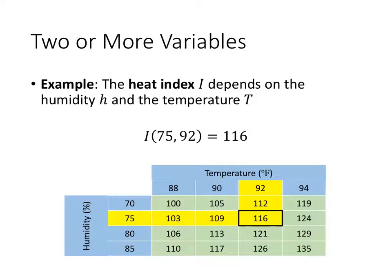So if, for example, we wanted to know what the heat index was on a 92 degree day when the humidity is 75%, we find 75 on the humidity track, 92 on the temperature track, and then we find that our heat index is 116.